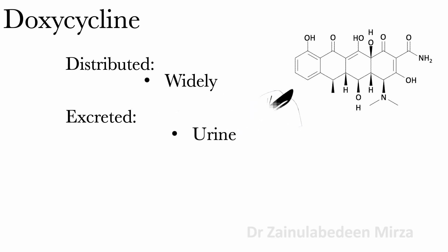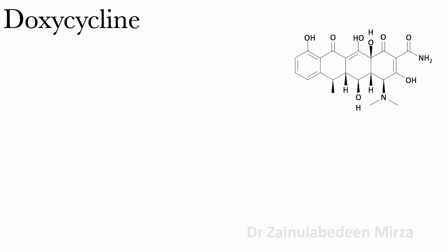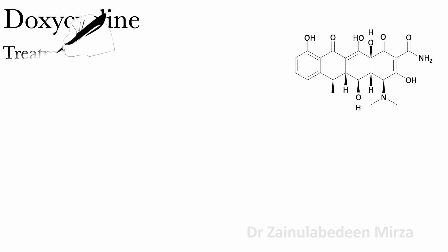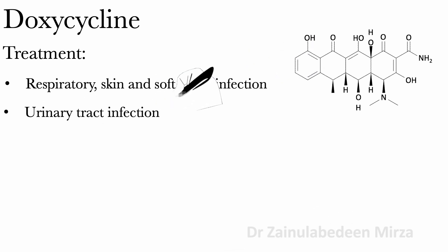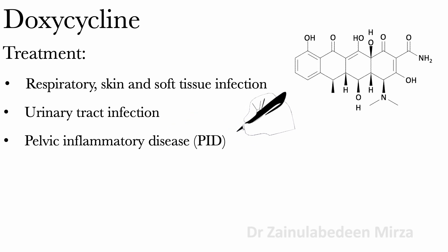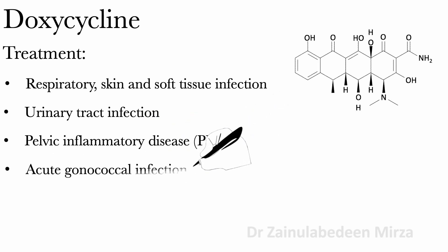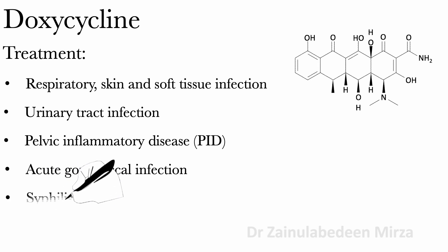What are the uses of doxycycline? Doxycycline is used to treat respiratory, skin, and soft tissue infections, urinary tract infection, pelvic inflammatory disease, acute gonococcal infection, syphilis, and cholera.